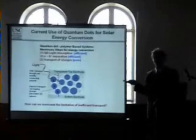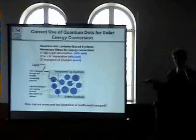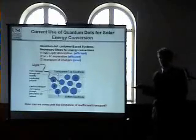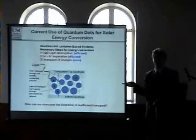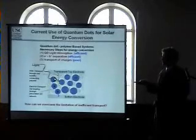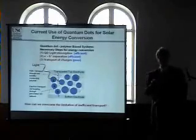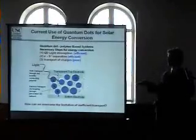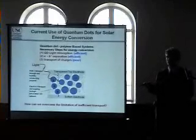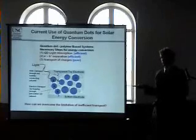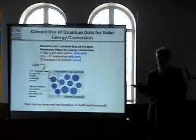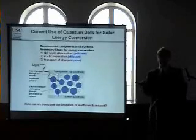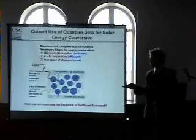We want to use this property of high absorption in quantum dots for solar energy conversion. Currently, quantum dots are used in solar energy conversion in schemes like this — one example has quantum dots dispersed in a conducting polymer matrix. In such schemes we exploit the high absorption to create many electron-hole pairs in the quantum dots, then separate the two charges into different materials, taking the hole from the quantum dot into the conducting polymer. But you're limited by the very low conductivity of the polymer — you create charges and separate them, but you can't actually create a useful current from the charge carriers.